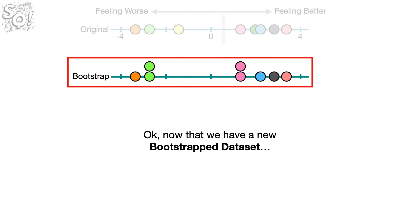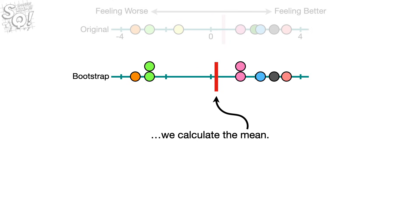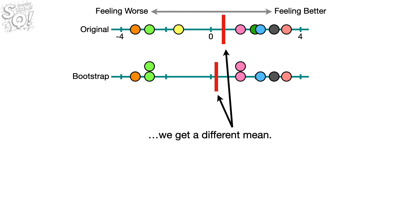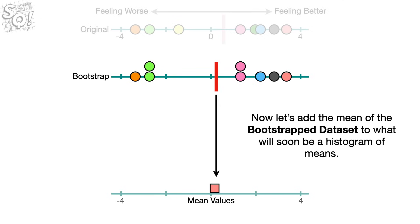Okay, now that we have a new bootstrapped data set, we calculate the mean. Note, because the bootstrapped data set is different from the original data set, we get a different mean. Now let's add the mean of the bootstrapped data set to what will soon be a histogram of means.